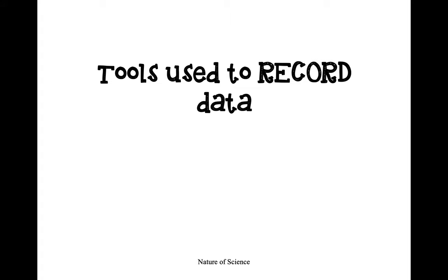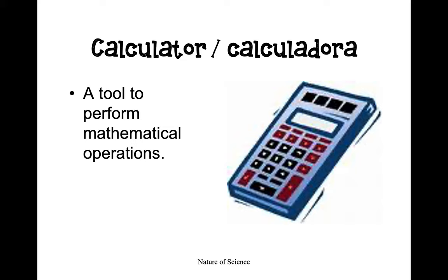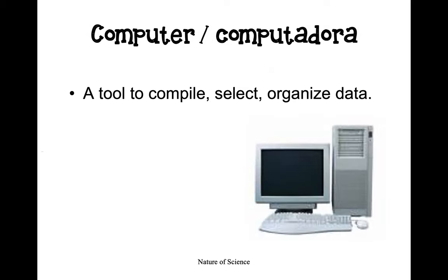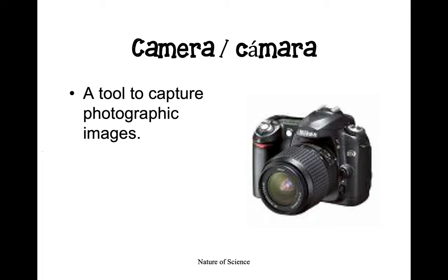Next, we'll talk about tools that are used to record data. When we record data, we make note of it and store it for later so we can compare it to our findings. The first tool is a calculator — a tool that helps us perform mathematical operations. When working with science, you will be using math, and calculators help facilitate and speed up that process. Next, computers are tools that help compile, select, and organize data we collect in our labs. Cameras can also help us capture photographic images to reference when working on a lab.